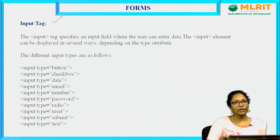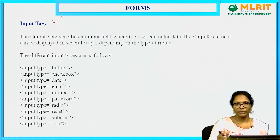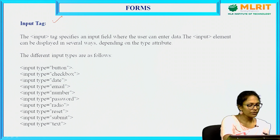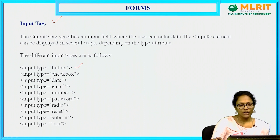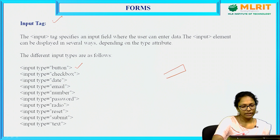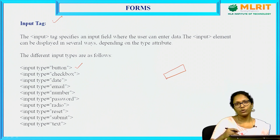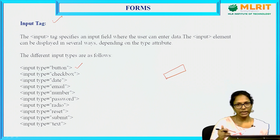Now we will discuss the input tag. In the input tag, we can give anything — that may be a text box, a checkbox, a radio button, or a text area. Based on your requirement, the input tag will be used with different options. The first one is input type button. If I give input type as button, a clickable button will be created. If I click on that, what should happen? That we cannot do using HTML alone — for that you use JavaScript, which we will discuss later.